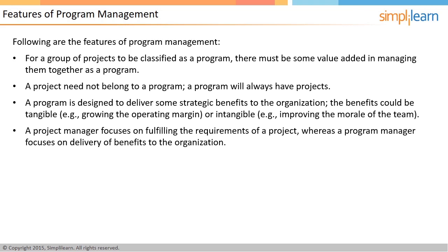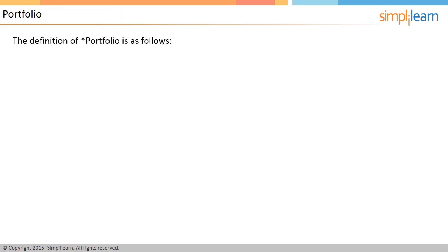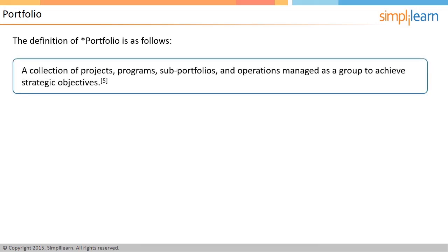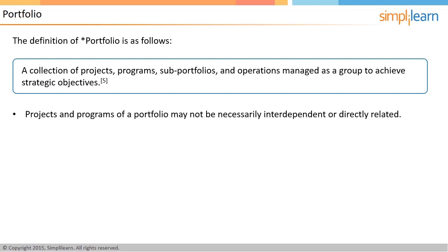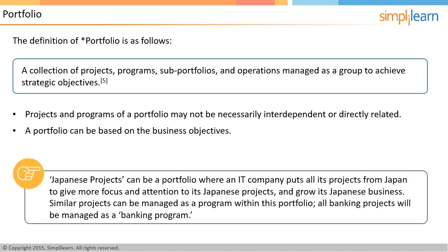A portfolio may have multiple projects and programs that are managed as a group to achieve strategic objectives. Note that all projects and programs in a portfolio may not be necessarily interdependent or directly related. A portfolio can be created based on business objectives. For example, an IT service company can have a portfolio named Japanese projects, formed with an aim to take over the Japanese market. Within this portfolio, similar projects can be managed as a program, and all banking projects from Japan can be managed as a banking program.